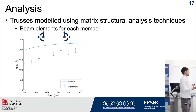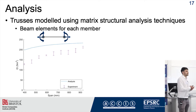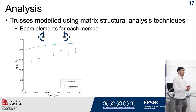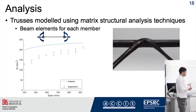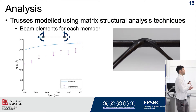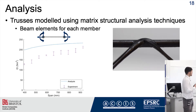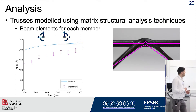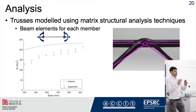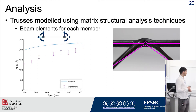If you model each member as a beam element, we found there wasn't a particularly good agreement between the experiment and the analysis. There's a bit of a problem at the truss joints if you're going to represent each member as a beam, because they don't really match up at a point — there's an eccentricity. With the original model, all we did was simply increase the shear member angle so that they all met at a point.